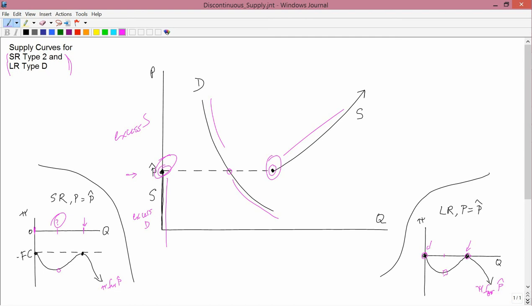Now, if you have a different kind of demand curve like this, call it D prime, then there's no problem at all. You've got demand equals supply right here, completely standard story, no problem. So it's not that short run type 2 and long run type D are always incompatible with competitive equilibrium. That's not true, but if the demand curve happens to fall in the gap, then it's incompatible.